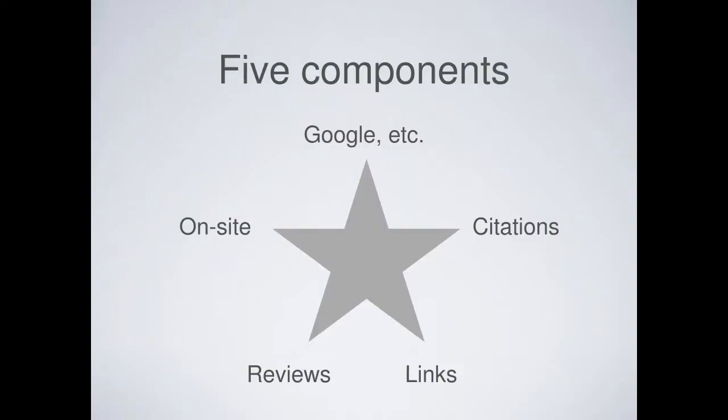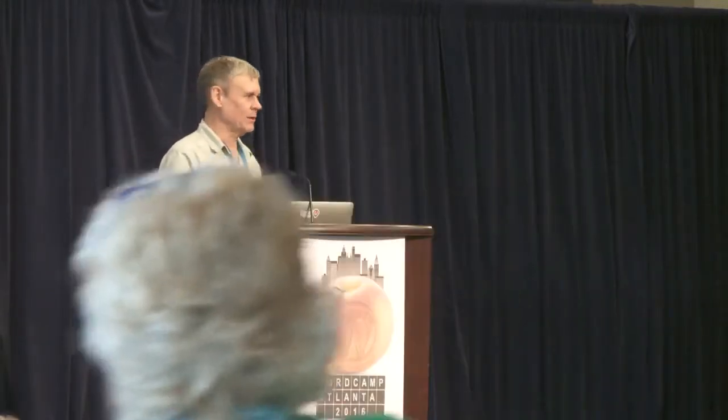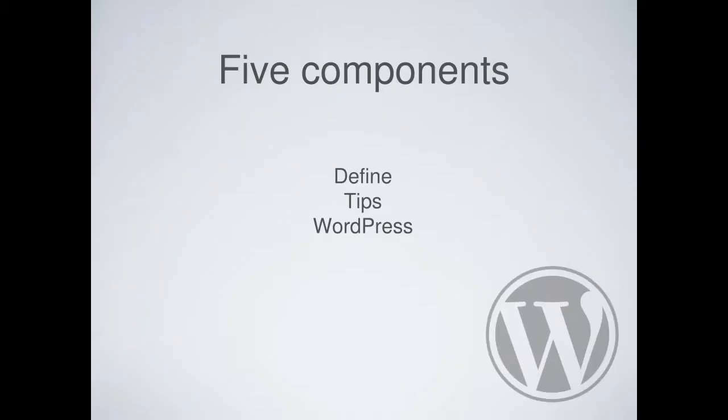I typically think of five components for local SEO: Google and some other major players, citations — which I'll define momentarily — links from somebody else's website to yours, reviews, and things you can do on your own website. This is a little different from regular SEO for a blog or e-commerce company. You'll see that most of these have to do with things that happen off your site — that's one place where this really differs from traditional website SEO.